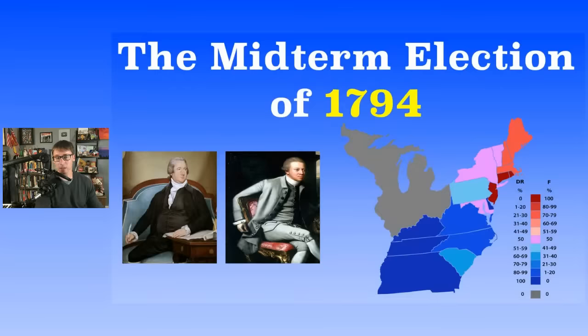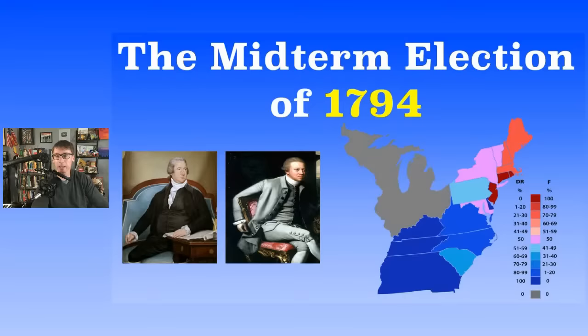Now George Washington is in his second term. He didn't want to run a second time; however, he could already see the country starting to divide. As early as 1792, things were going that way. By 1794, you have political parties — the Federalists and the Democratic-Republicans.